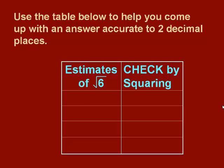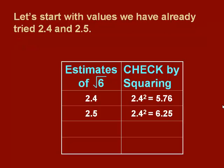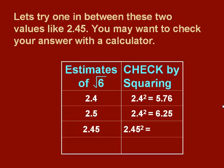Let's use the table below to help you come up with an answer accurate to two decimal places. Let's put in our first set of numbers together. So we'll put in 2.4 and 2.5. So that gave us our low estimate and our high estimate. Now we want to try a number in between these two values. Since these numbers are sort of low and high by the same amount, trying right in the middle is a good idea.